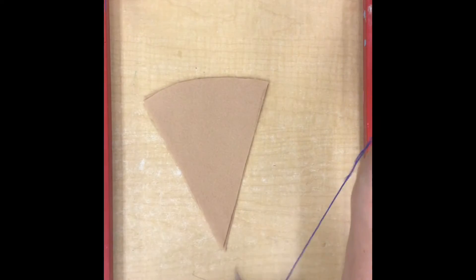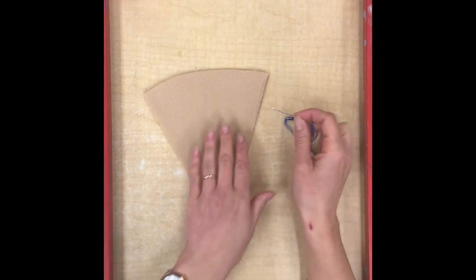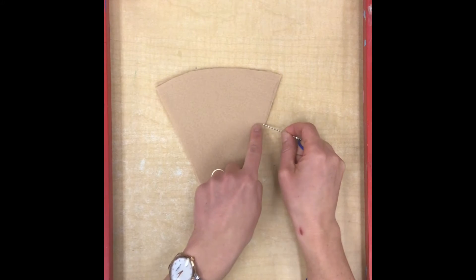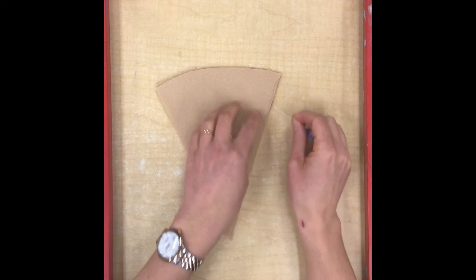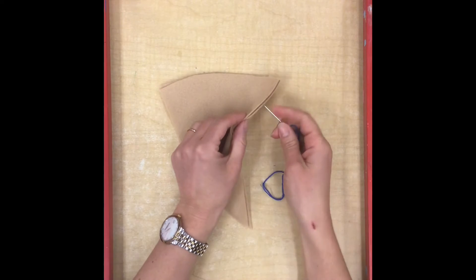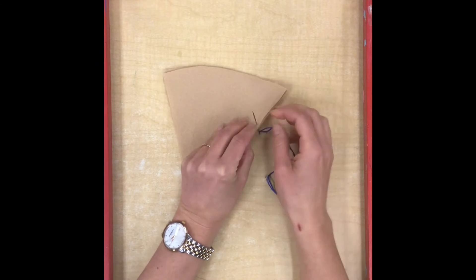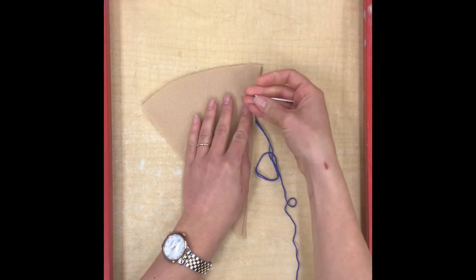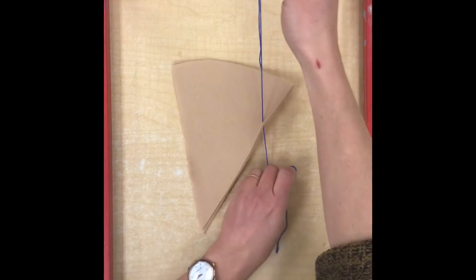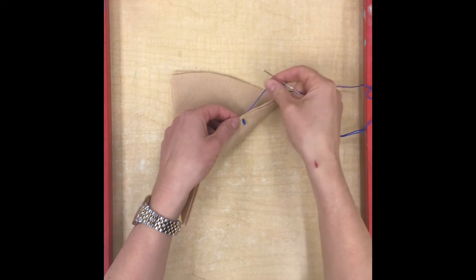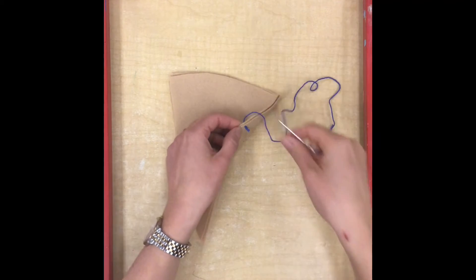Now I'm going to take my threaded needle and I'm going to start a little bit below the crust here on the side. You can start on the right hand side or the left, whatever feels better for you. So I'm going down below my crust just a little bit and I'm going to come up from the bottom and pull my thread all the way through until the knot catches on the back. The knot keeps the thread from coming out.